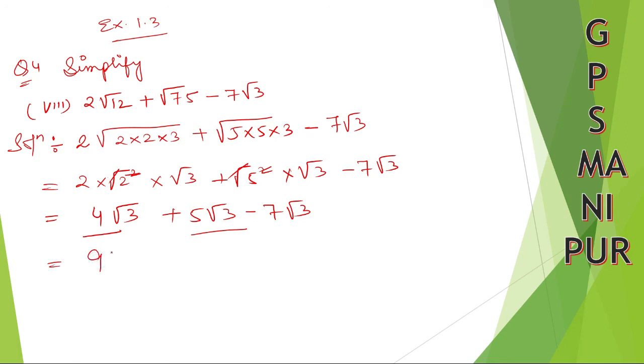5 + 4 = 9, so 9√3 is common, minus 7√3. This is plus, this is minus, so 9 - 7 = 2√3.